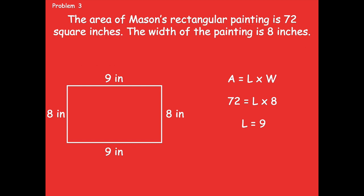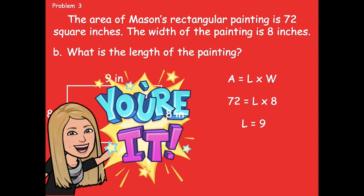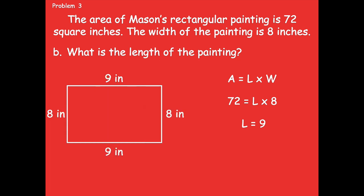Let's look at part B. It says what is the length of the painting? We kind of already solved that in part A to find our side lengths. If you know the answer, keep on playing. If you need to look back at your work, then pause and do that. The length of the painting is nine inches. Writing that statement clarifies the answer to the question: what is the length of the painting?